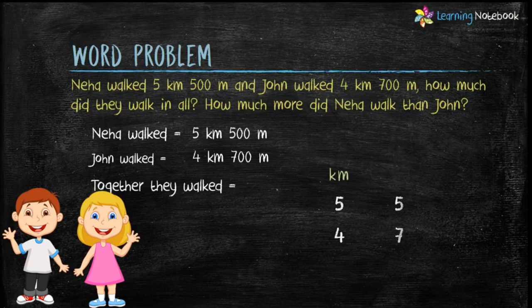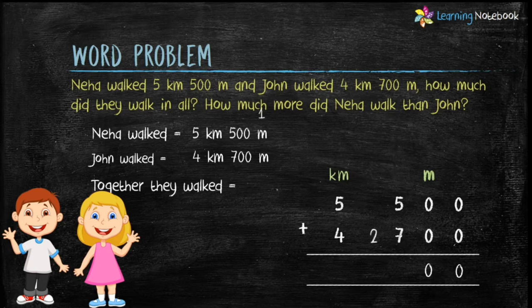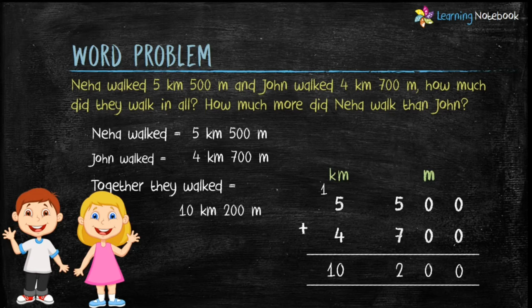Together they walked = 5 km 500 m plus 4 km 700 m. Write them in columns — meter values below meter unit and kilometer values below kilometer unit. Now let's add them: 0 plus 0 equals 0; 0 plus 0 equals 0; 5 plus 7 equals 12 — regroup: 2 comes in the answer and 1 gets carried over. Then 1 carry plus 5 plus 4 equals 10. Therefore, together they walked 10 kilometers 200 meters.